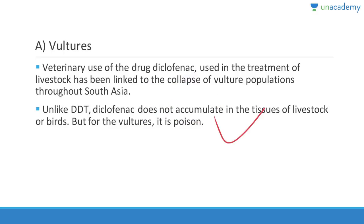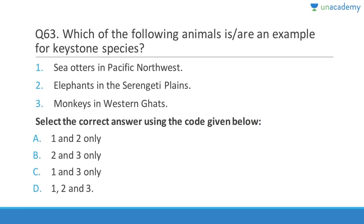Question 63: Which animals are examples of keystone species? Sea otters in the Pacific Northwest — yes, correct. Elephants in Serengeti plains — correct. Monkeys in Western Ghats — if you remove monkeys and Western Ghats, nothing much will happen. Answer is A, 1 and 2. A keystone species is a plant or animal that plays a unique and crucial role in the way an ecosystem functions. Without keystone species, the ecosystem would be dramatically different or may cease to exist altogether.